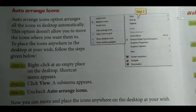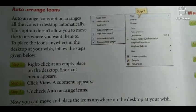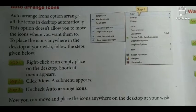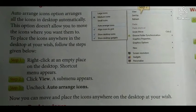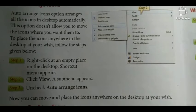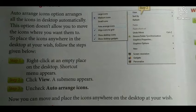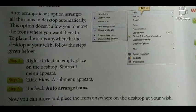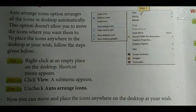Step 1 - Right-click at an empty place on the desktop. A shortcut menu appears. Step 2 - Click View. A submenu appears. Step 3 - Uncheck auto arrange icons. Now you can move and place the icons anywhere on the desktop at your wish.